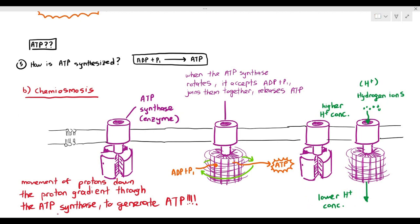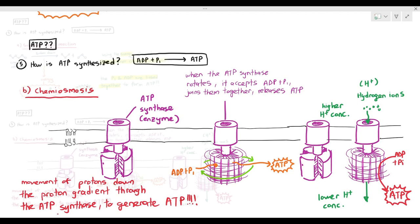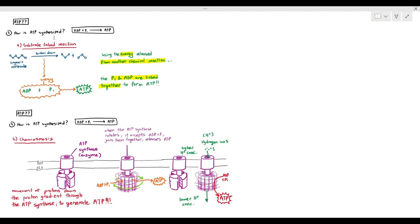This is actually an example of facilitated diffusion. You can use the word protons or hydrogen ions in the exam. The movement of protons or hydrogen ions down the proton gradient through the ATP synthase will generate ATP. Chemiosmosis is actually the main way your cells synthesize ATP, not substrate-linked reaction. Both can happen and both do happen, but chemiosmosis is the main way the majority of your ATP is synthesized.